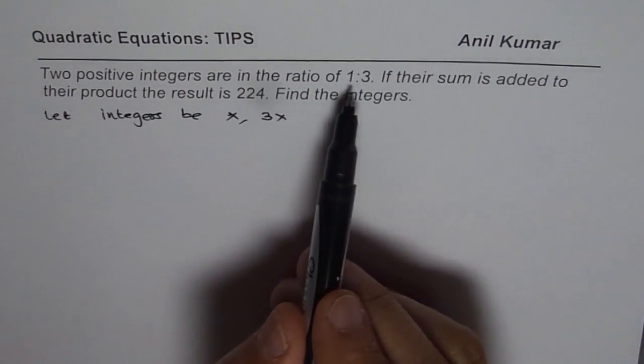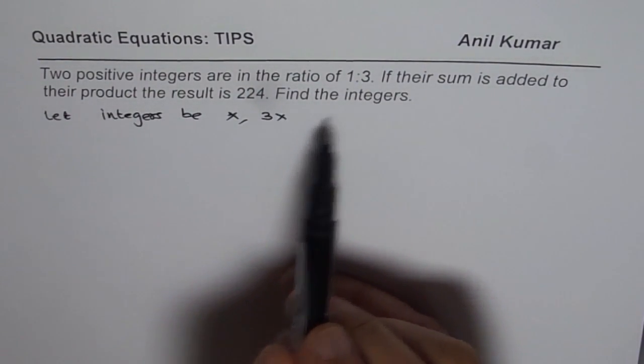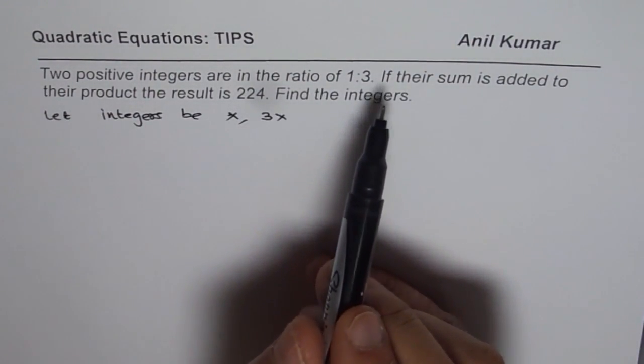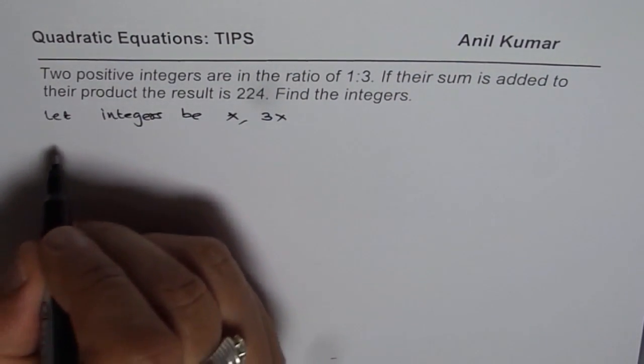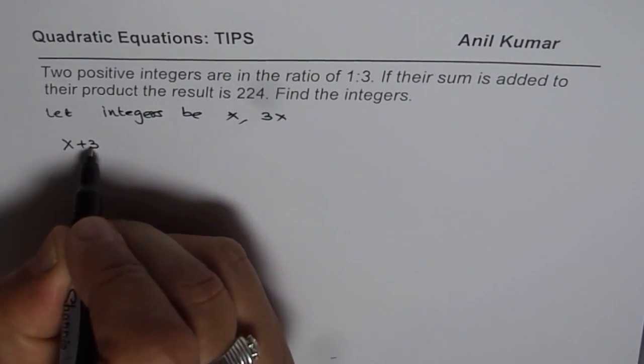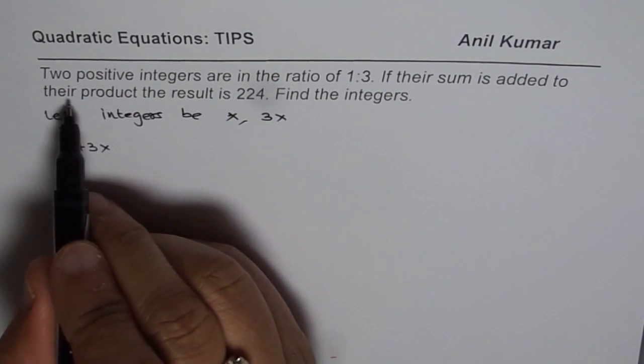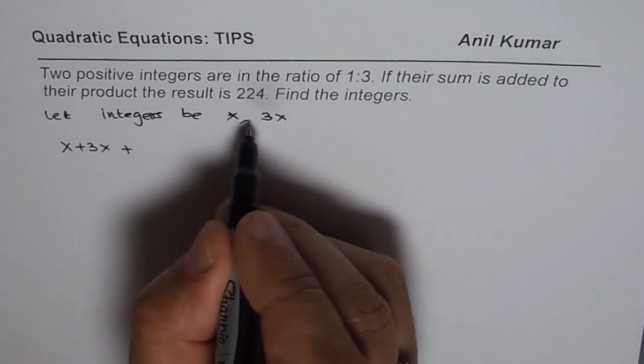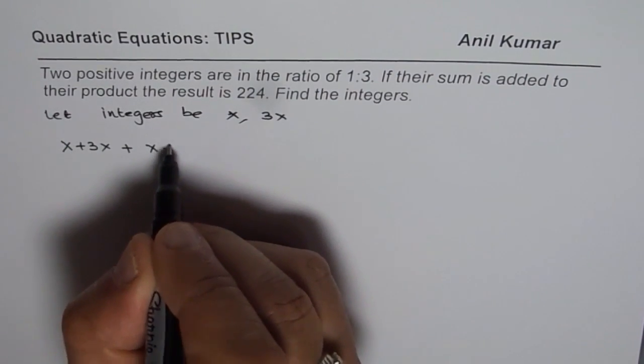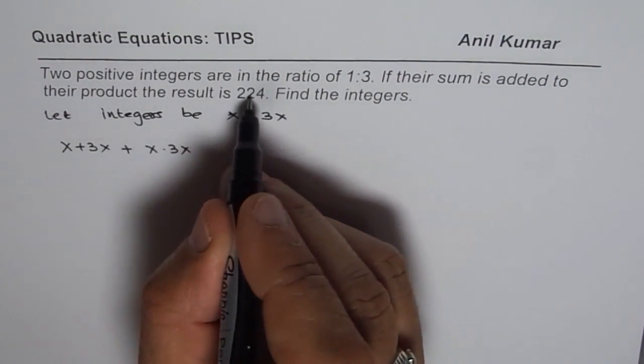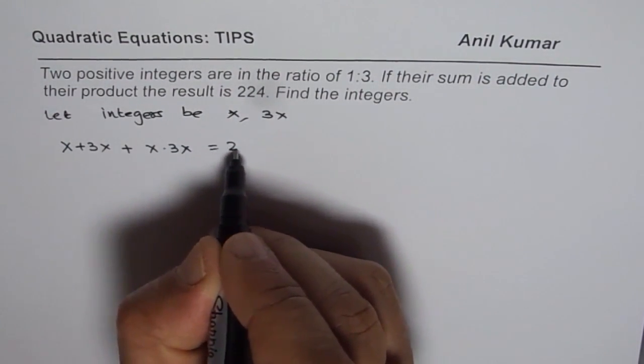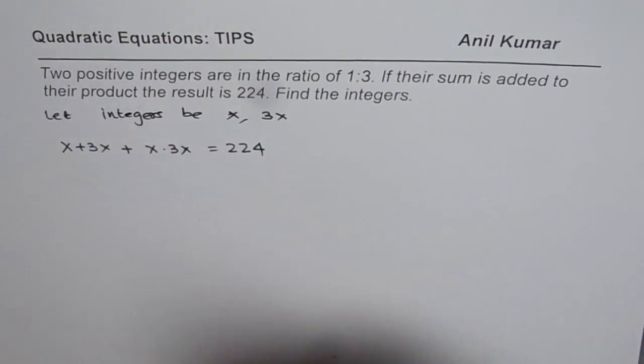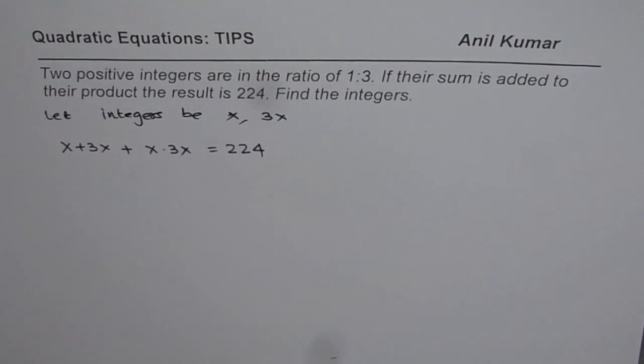I hope that statement is now absolutely clear. Now it is simpler. It says if their sum is added to their product - now what is the sum? Sum is x plus 3x. So if their sum is added to their product, it means that is added to product means x times 3x, then the result is 224. Find the numbers or the integers.